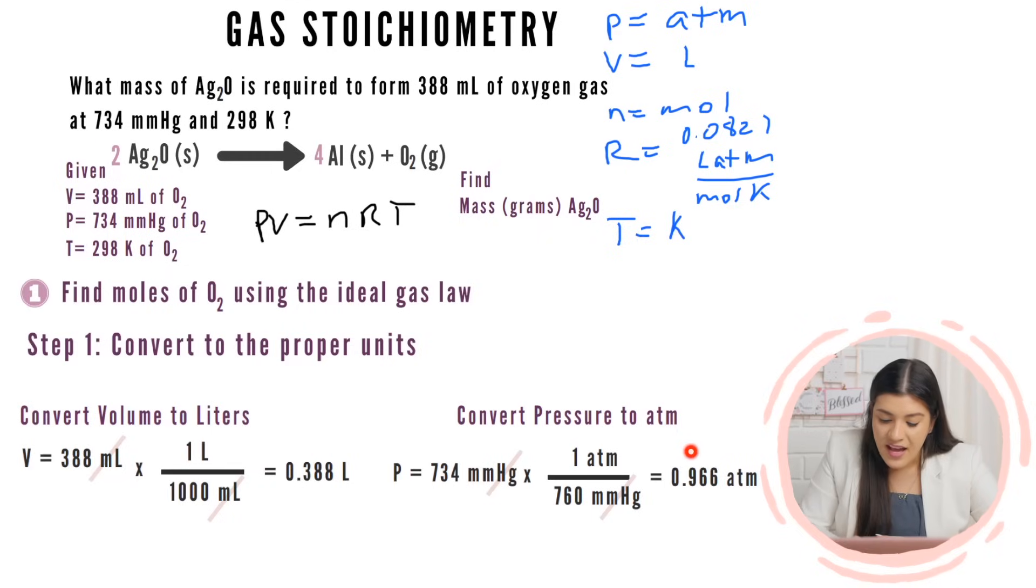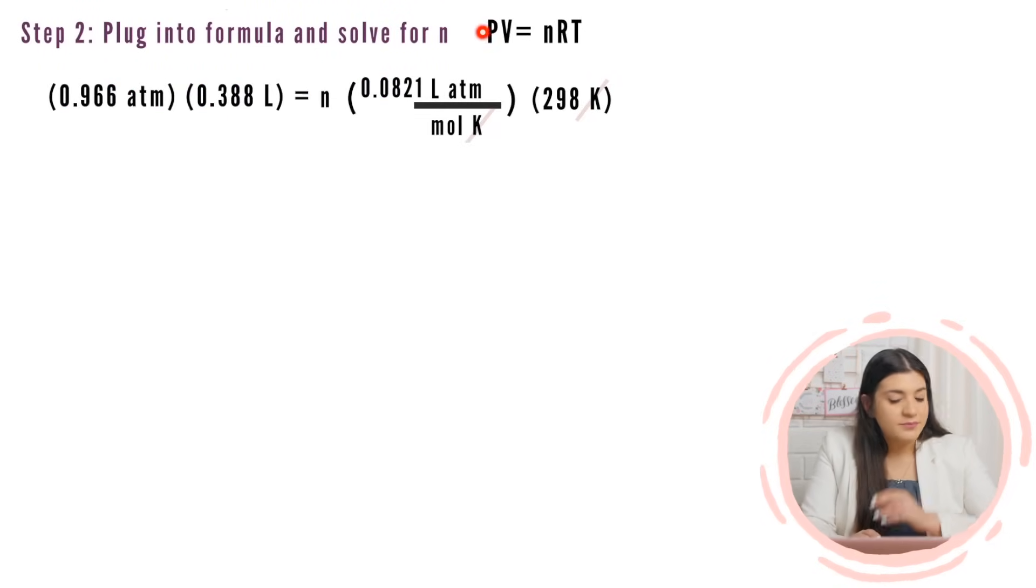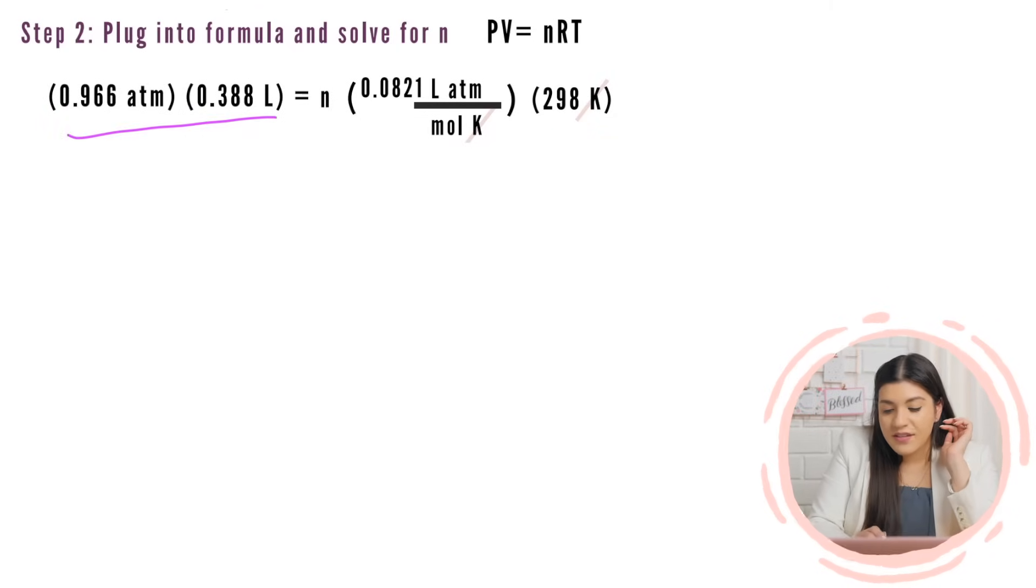So first things first, what you want to do is convert all of these units into the proper ones. Our pressure is not in the correct unit of atmospheres, it's in millimeters mercury. So what I want to do first is convert that. I'm going to convert the pressure to atmospheres. And remember, this is just one atmosphere is equal to 760 millimeters mercury. That's one to have memorized and have down. And I think you bought the gas law notes, didn't you? Yeah. This is actually part of the gas stoichiometry packet. So from here, I'm just canceling out my units. And now I'm getting my proper unit of atmospheres.